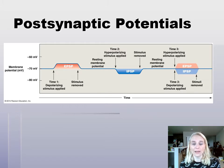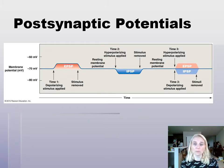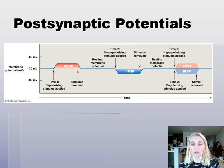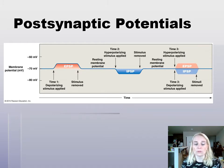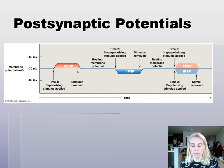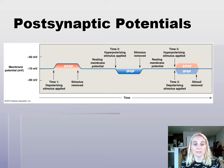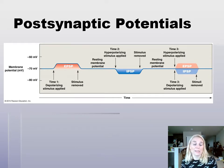If we do an IPSP, which is hyperpolarizing, we're taking the transmembrane potential further away from threshold, which makes it harder for the cell to reach threshold at that initial segment of the axon. So you can think of these graded potentials — the depolarizing or hyperpolarizing ones — as either facilitating an action potential or inhibiting a potential action potential.